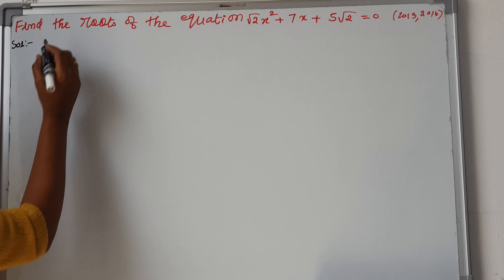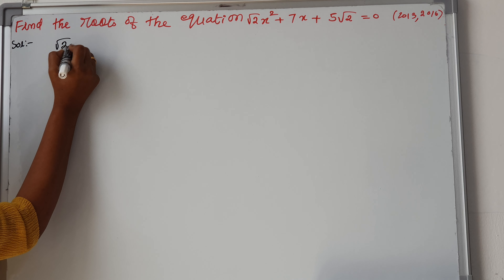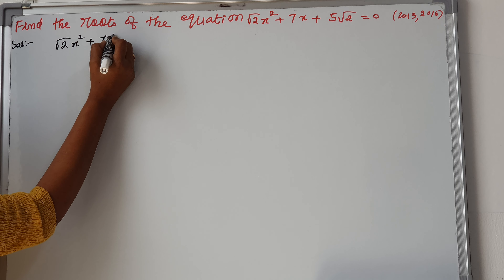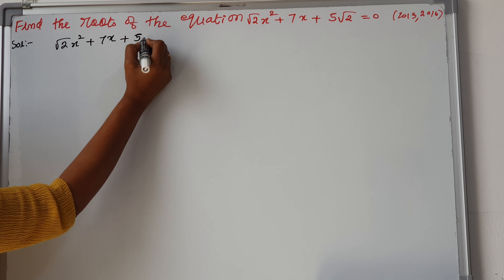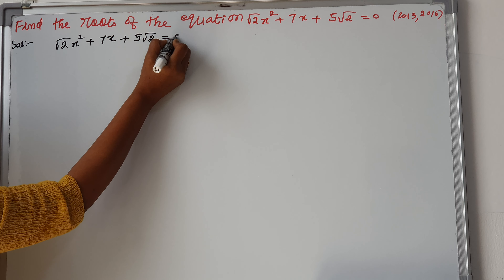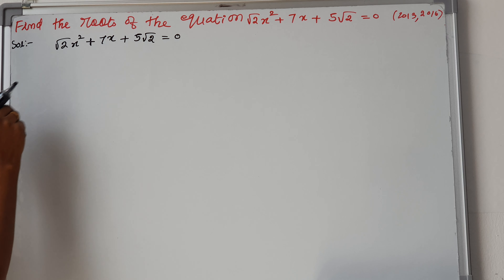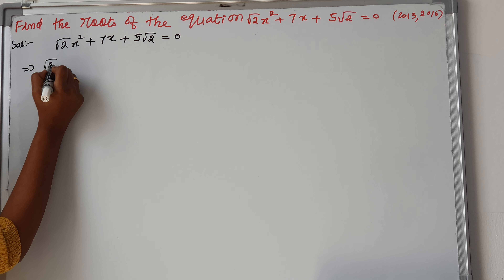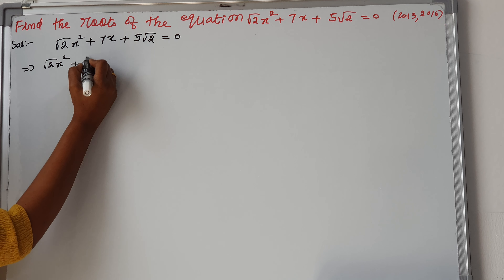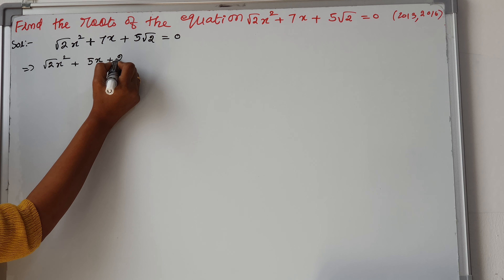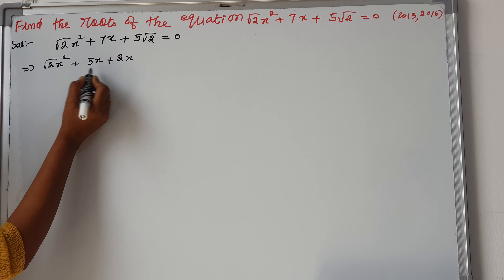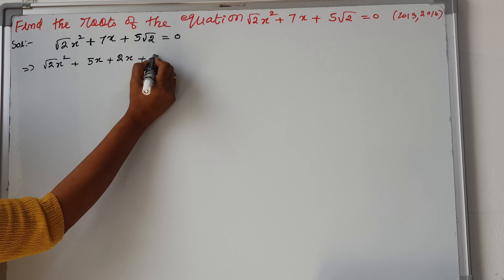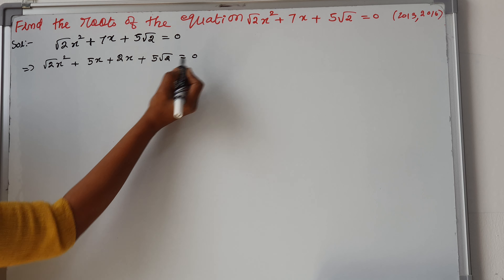The given equation is root 2 x squared plus 7x plus 5 root 2 is equal to 0. You have to split the middle term 7x. We split 7x as 5x plus 2x, giving: root 2 x squared plus 5x plus 2x plus 5 root 2 is equal to 0.